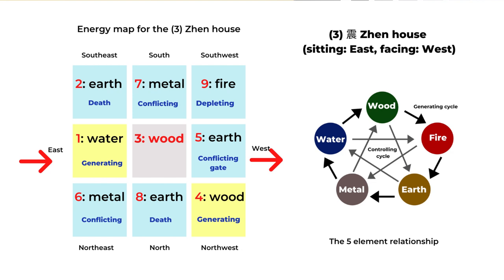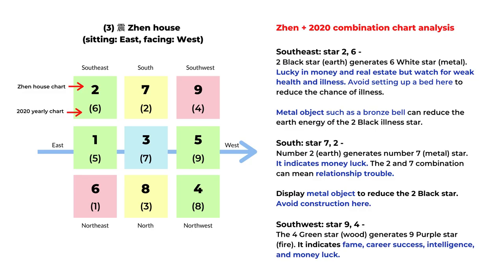For the Zheng house you can see the map. We have two, seven, nine, one, three, five, and six, eight, four. The blue part is the negative energy — death, conflicting, and depleting. The yellow one is generating energy. We'll look at the combination with the 2020 yearly chart for more detail. I place the 2020 yearly chart numbers below the Zheng house chart numbers. The red area is the best, the green area means watch out for health and possible disease or accident, the yellow area is generally good but sometimes mixed, and the blue area is more negative.